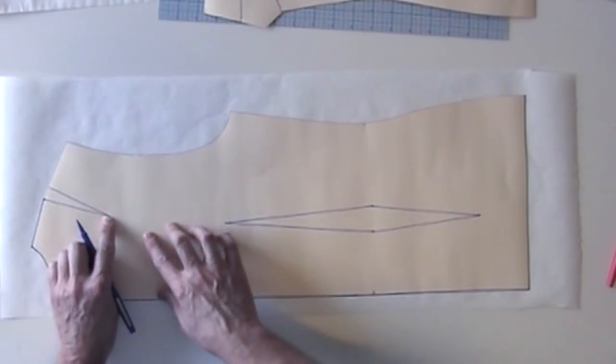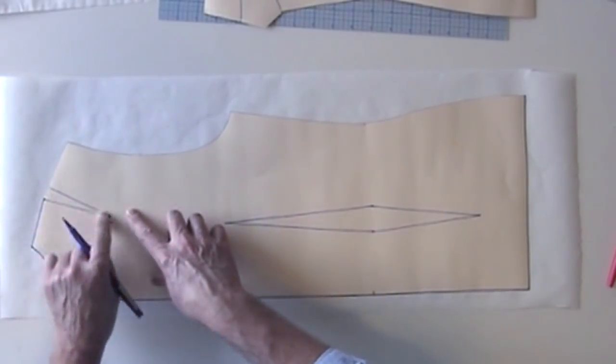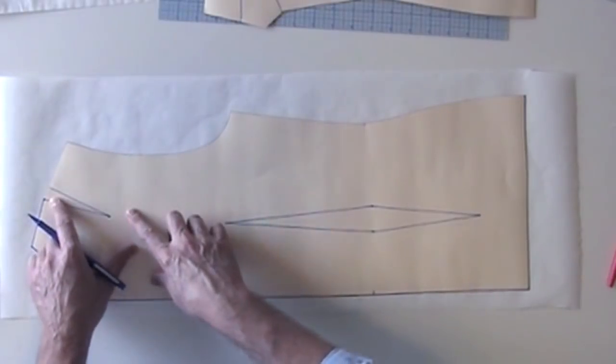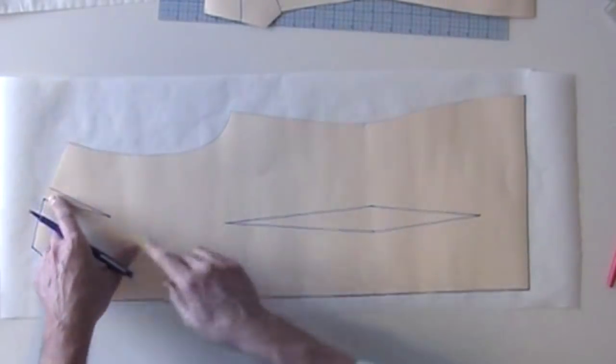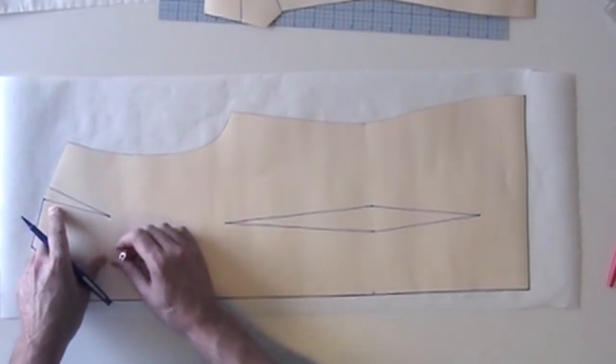And you're going to need, if your dart is now in your shoulder as it is here, you're going to need to rotate that out back into your armhole.